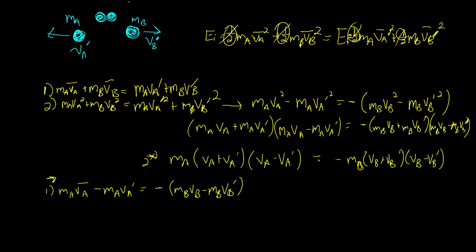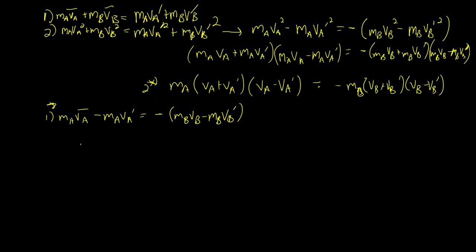And now what we can do here is we can divide these two equations. In fact, we'll divide equation two by equation one star. So we'll do the proportion of these two. So we'll take mA vA plus vA prime times vA minus vA prime, and we'll pull out mA's from this over here also. So minus mB vB plus vB prime.